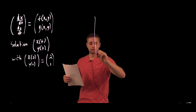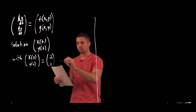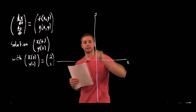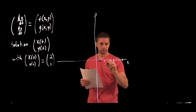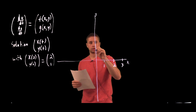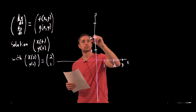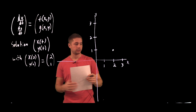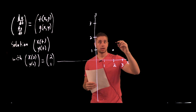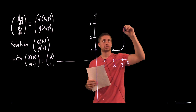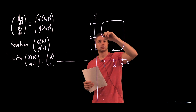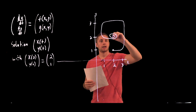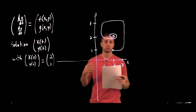We're given its graph in the phase plane, so we have the x-y plane. The graph of this solution will start at the initial condition at the point 2 comma 1, and it's going to kind of wrap around like this, then just keep spiraling until the spirals get really, really small and you can't see them anymore.